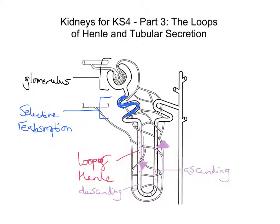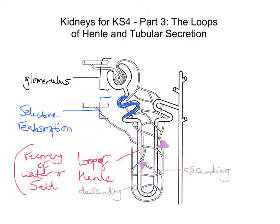I'll talk about that first and then we'll come on to tubular secretion. The loop of Henle is this long U-shaped portion of each nephron of the kidney, designed to help control the amount of water and salt — sodium chloride — that we have in our urine. It's involved in the recovery of water and salt, and this function allows production of urine that's far more concentrated than the blood.